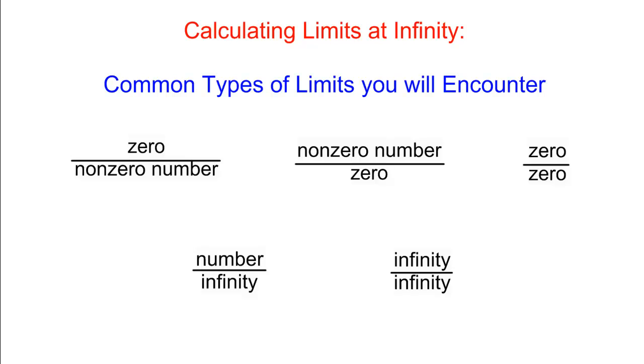For example, maybe you take a limit. Let's pretend we're taking the limit as X goes to infinity of our function, and say you see that the form is going to be 0 over a non-zero number, something like 0 over 7. Well, okay, that one's not that strange. 0 over 7, that ought to be 0.